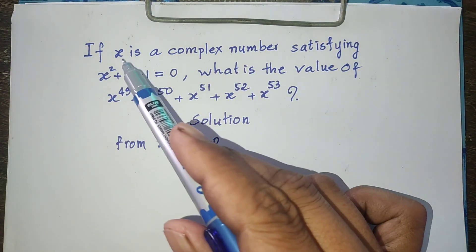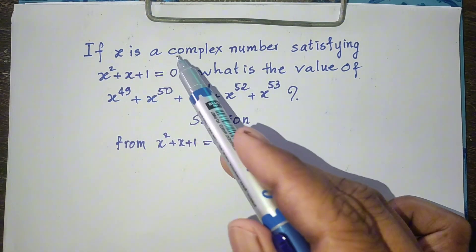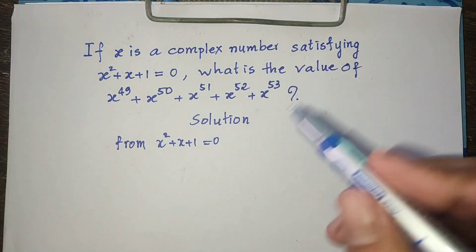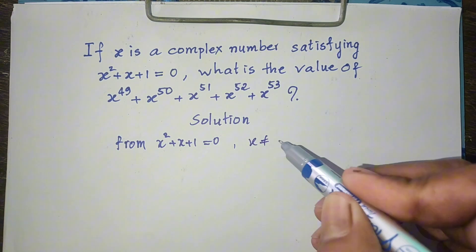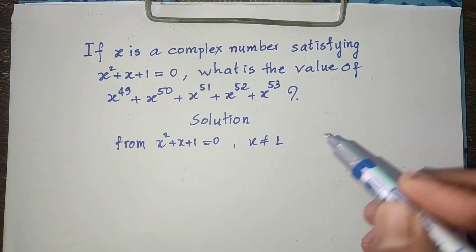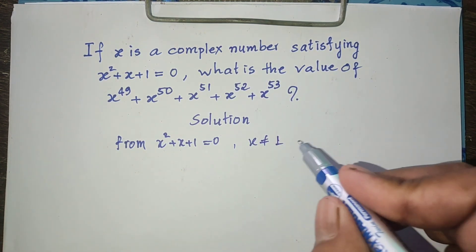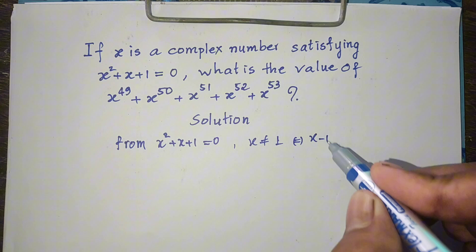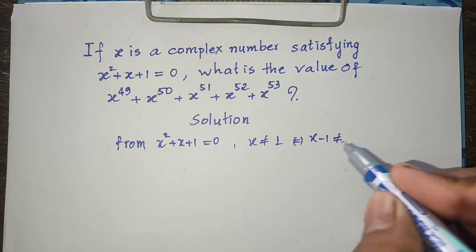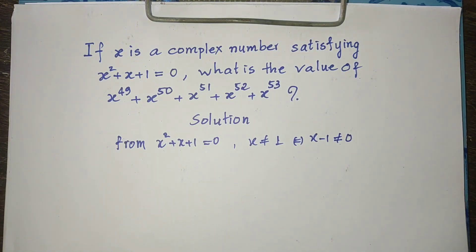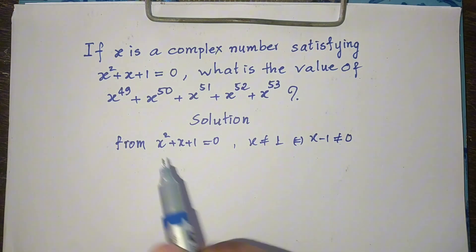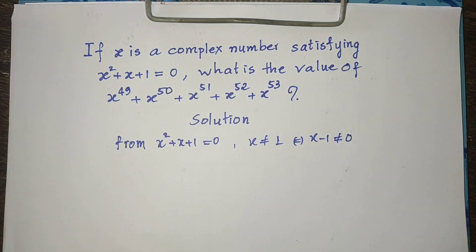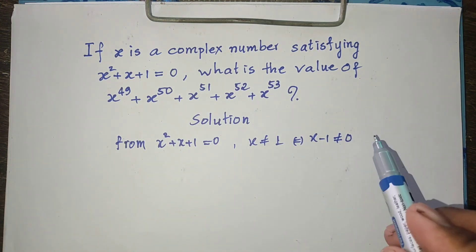We know that h is a complex number, so h is not equal to 1. Therefore, h minus 1 is not equal to 0.